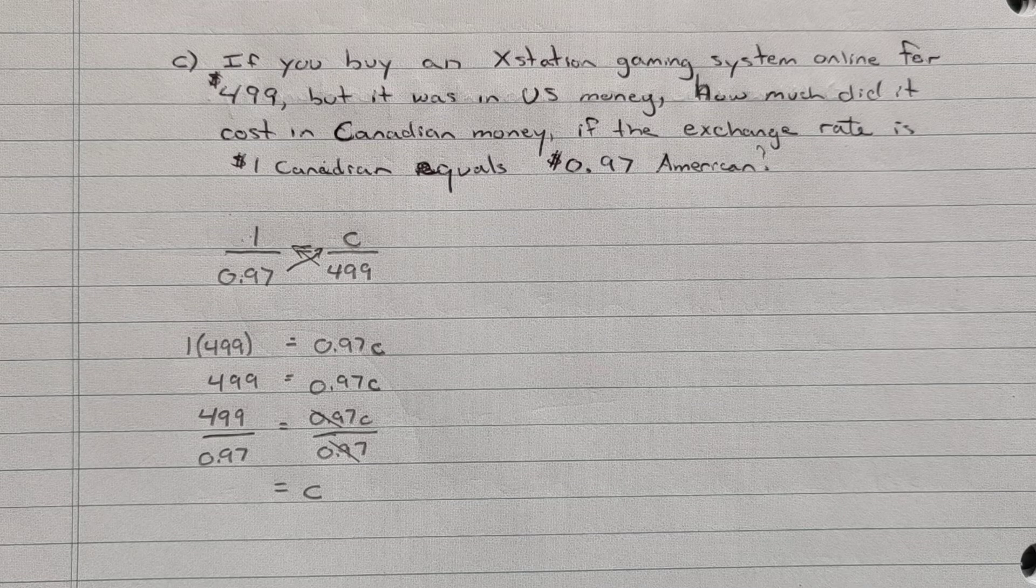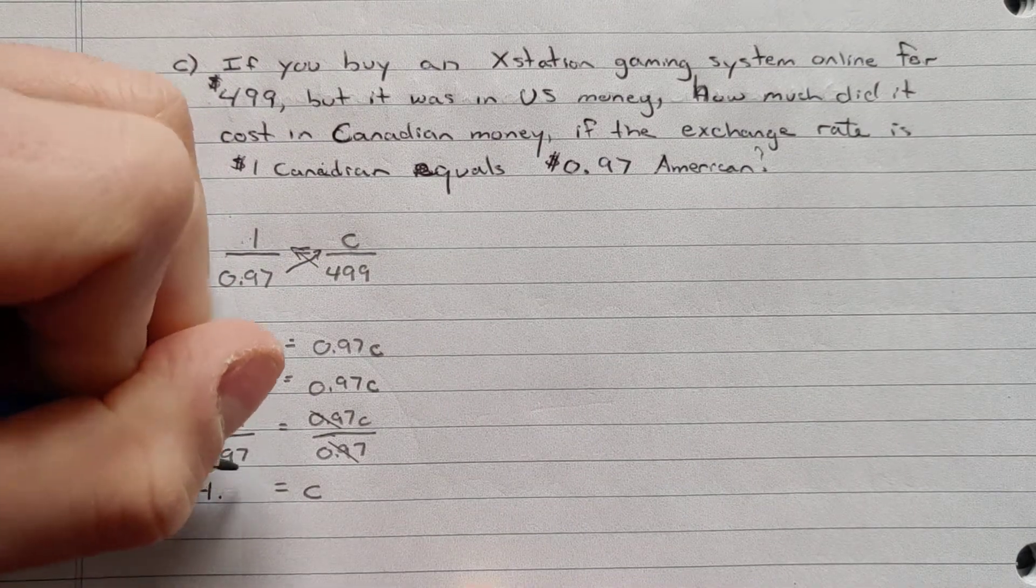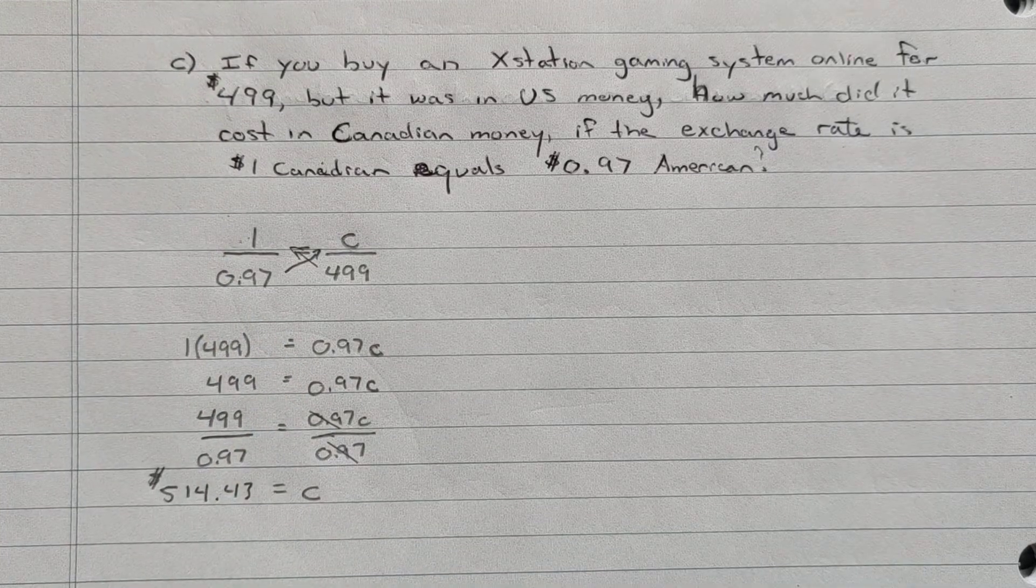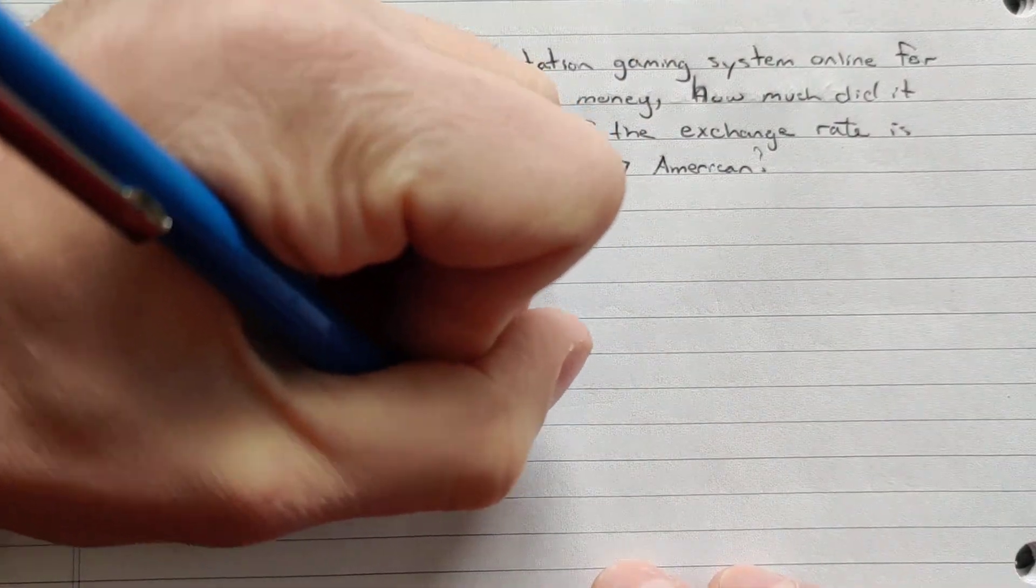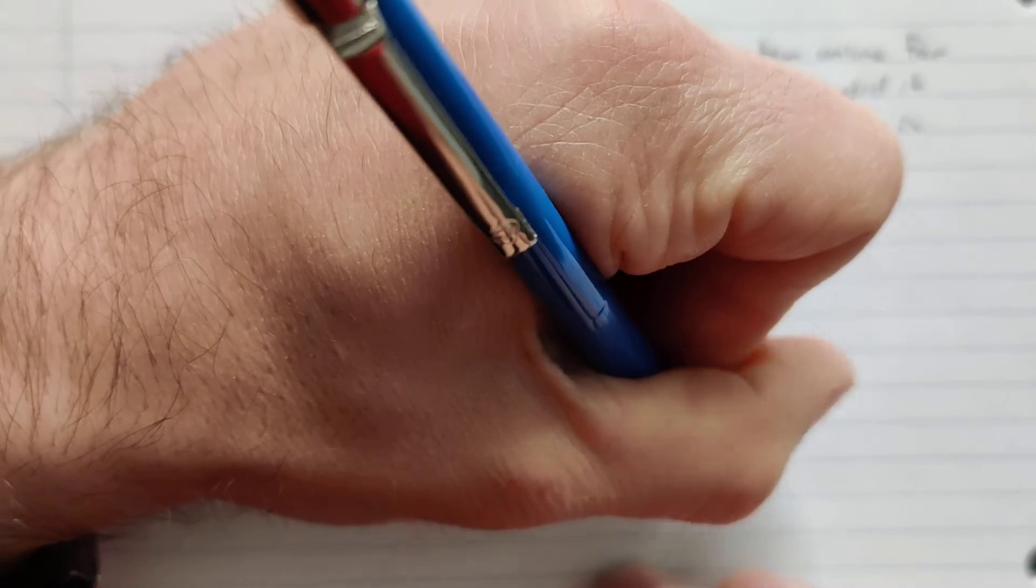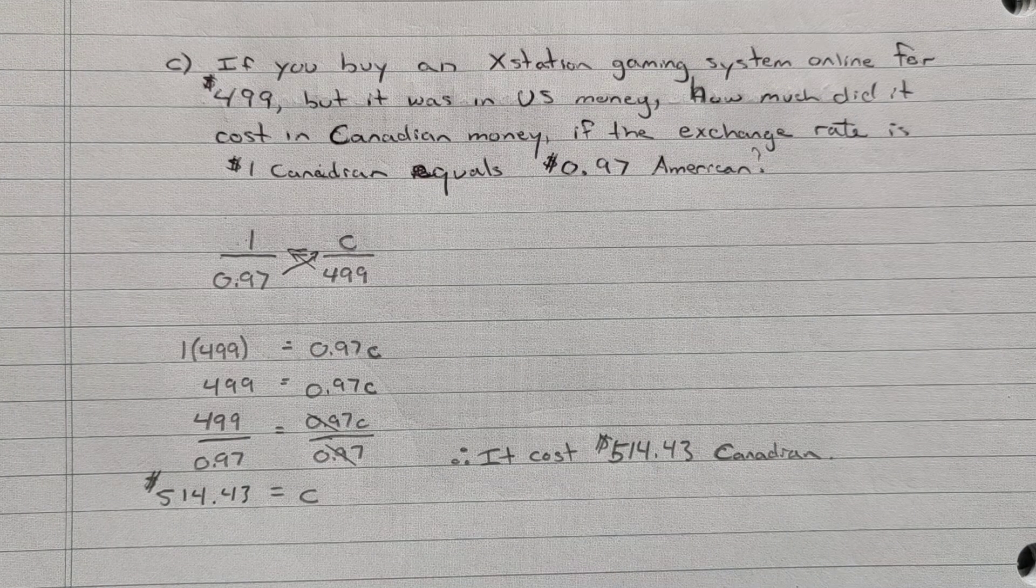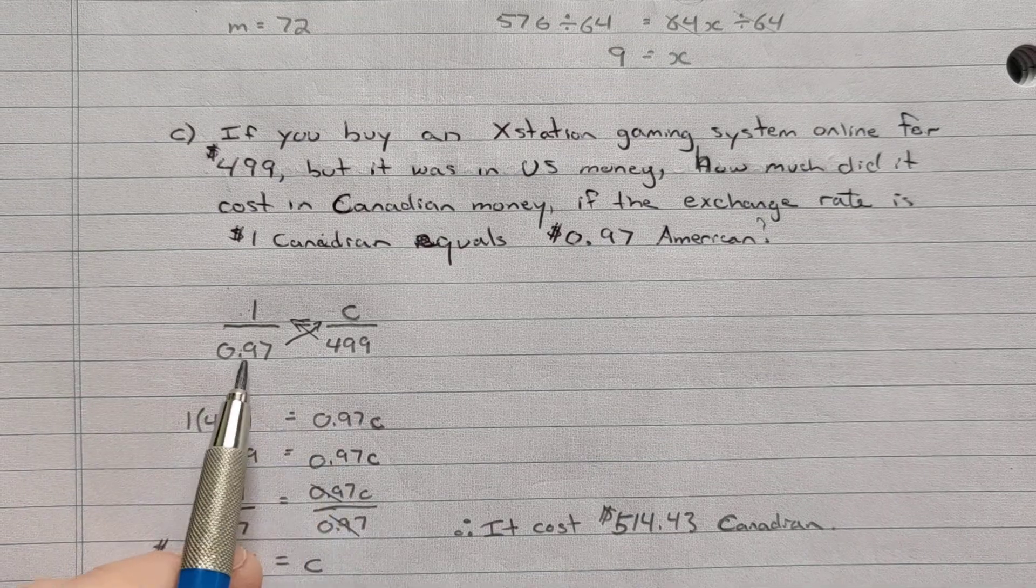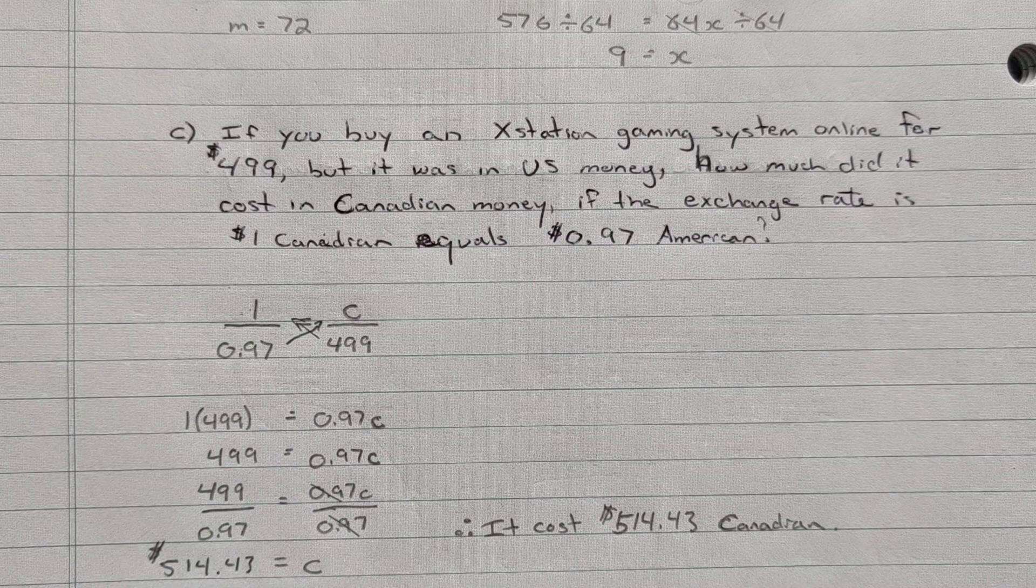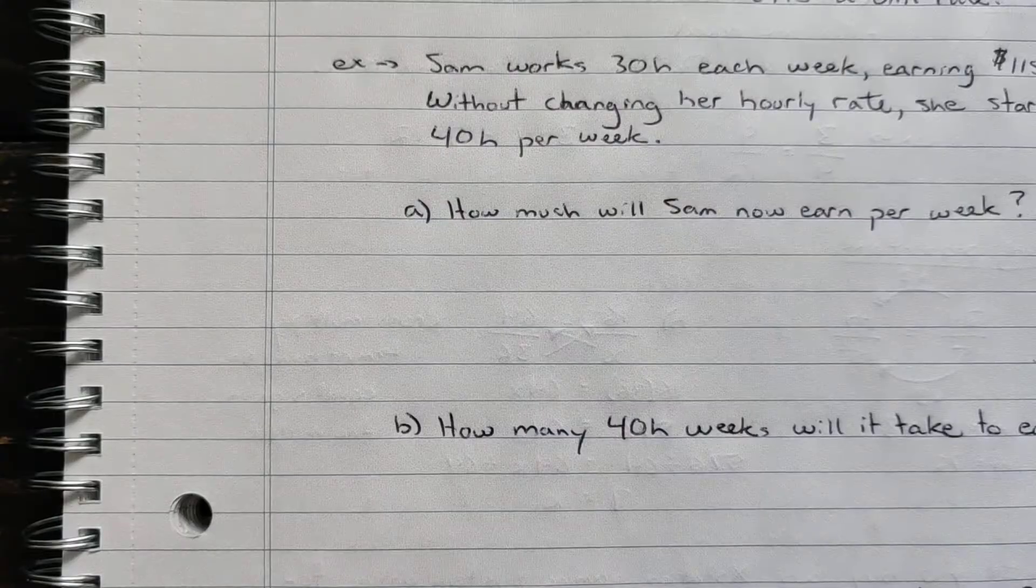So we'll cancel out these ones. We're just left with C over here. And then we do our 499 divided by 0.97, and we get approximately $514 and 43 cents. So the cost of the X Station Gaming System in Canadian was $514.43. And again, I like this cross-multiplying method when we have these decimals in that. I find it's easier to work with it in the cross-multiplying method. But again, it's your choice how you want to do it. Try both if you want. See what you prefer.